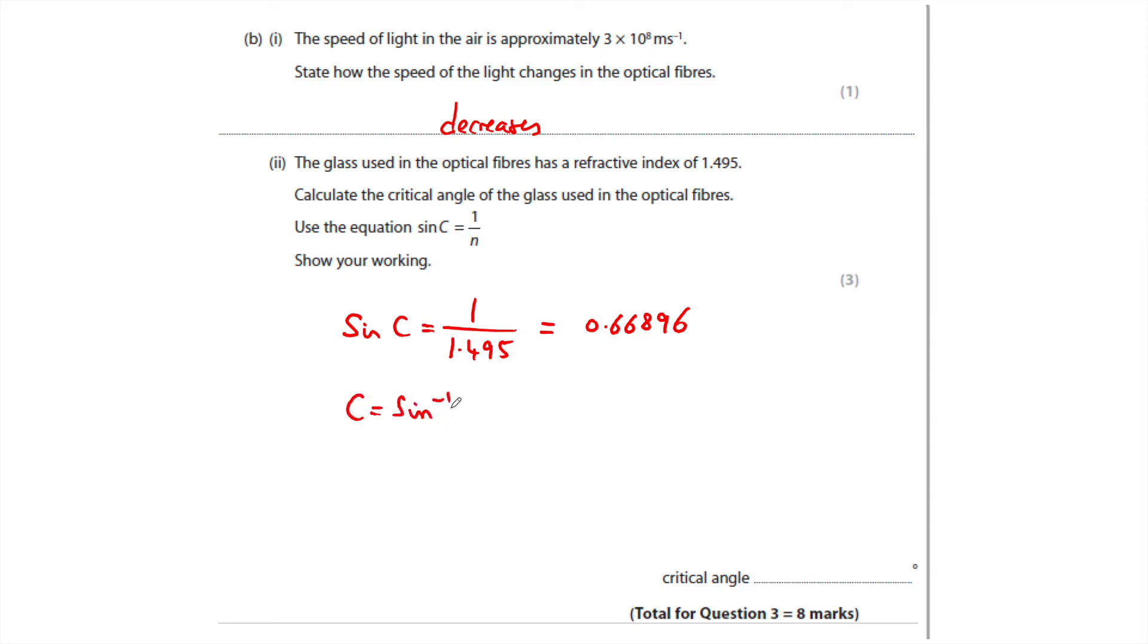Now, of course, to then find c, you have to do the inverse of sine. So on your calculator, find the sine button and then press shift and that sine button, and that will give you the inverse sine to the minus one. And we're going to find out sine to the minus one of that value to find the angle, and that gives you 42.00 degrees.